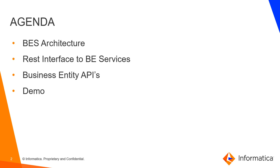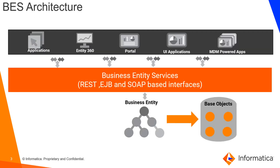The next slide is the BE architecture. As you can see in the diagram at the top, we have applications like MDM 360, a portal, and third-party applications. These interact with our business entity via SOAP-based interfaces, EJB, or REST-based interfaces. In turn, the business entity converts to base objects and saves the data at the base object level.